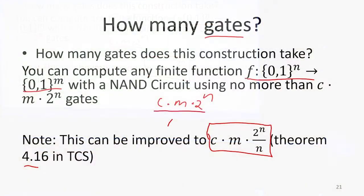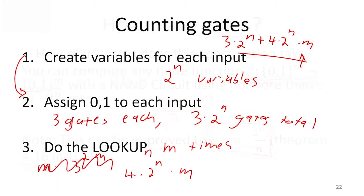So we wanted to show that it was a constant times m times 2 to the n that we needed at most that many gates. So let's see where that is here. 4 is our constant times m times 2 to the n. So we kind of see that pattern over here.